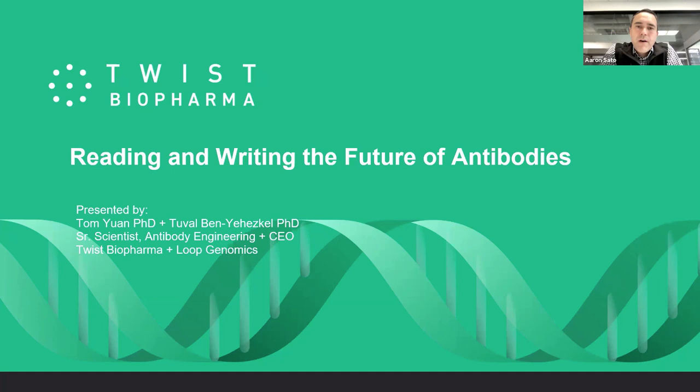Now on to some introductions. Dr. Tom Yuan is an antibody engineer at TWIST and in the TWIST biopharma division. His work focuses on leveraging TWIST DNA printing technology to design, pan, screen, and characterize synthetic and semi-synthetic antibodies, both for our client-based and internal projects. Previously, Tom worked at Surzan, where he discovered and engineered bispecific Wnt agonists.